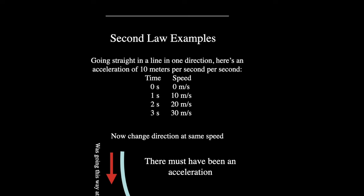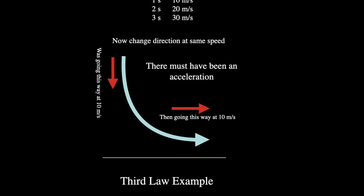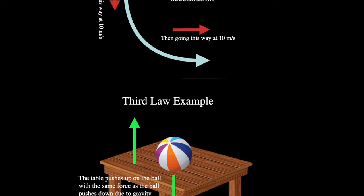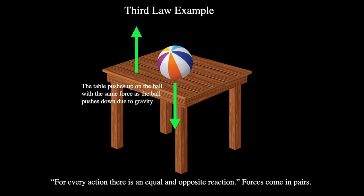Let's look at a simple second law example. Here is an acceleration — for every second it goes up, it goes 10 meters per second faster. And if we start going the direction of the red arrow at 10 meters per second downward and end up going to the right at 10 meters per second, the speed hasn't changed but the direction has, so there must have been an acceleration — meaning we stopped moving down and started moving right, which is a change in the velocity.